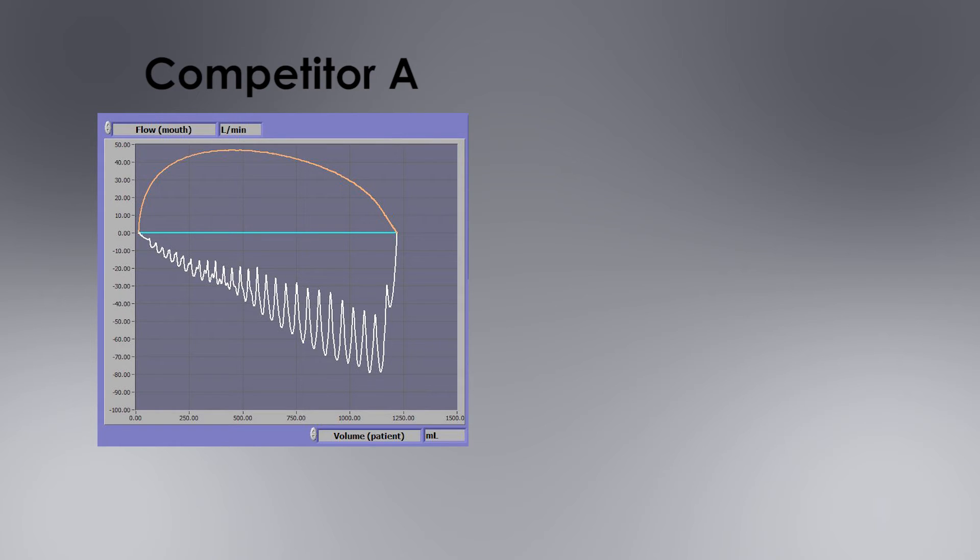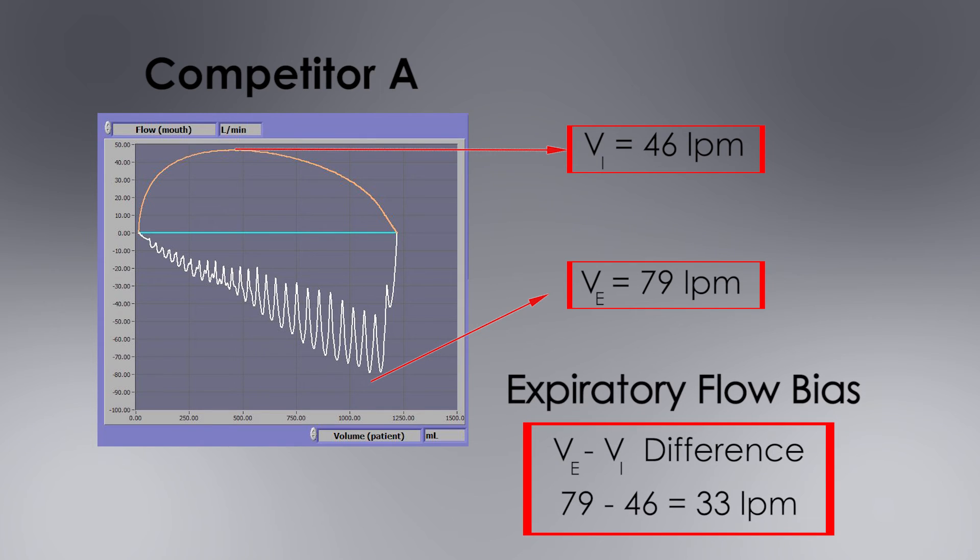For OPEP competitor A, the peak expiratory flow is 79 liters per minute. The peak inspiratory flow is 46 liters per minute. So the difference is 33 liters per minute.